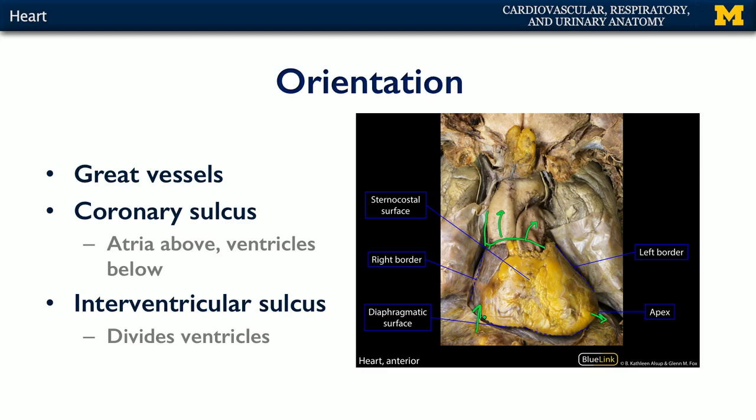We can see that there are different borders and surfaces to the heart. For instance, there is a right border, a left border, and an inferior border. There's also a sternocostal surface that would be just deep to the sternum and ribs, as well as portions of the lung.